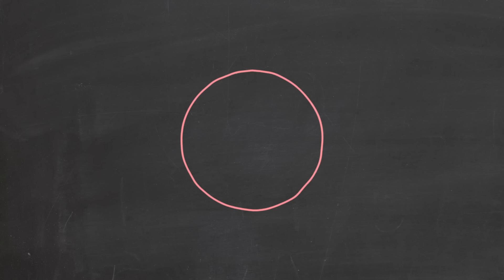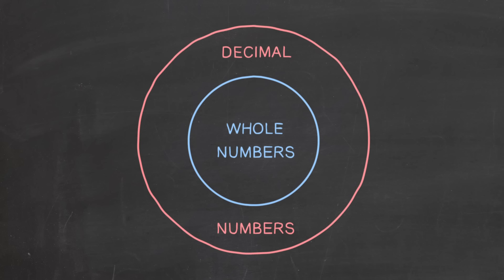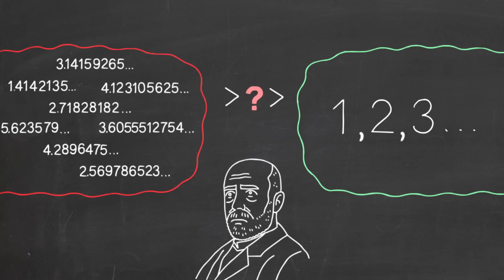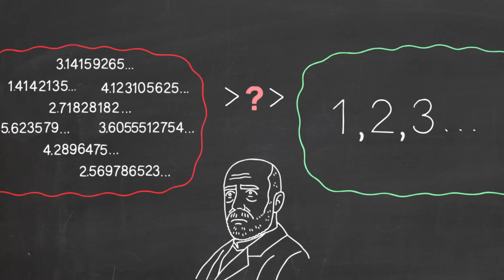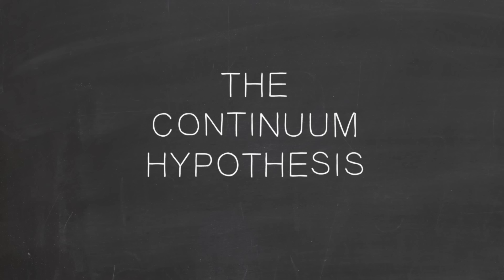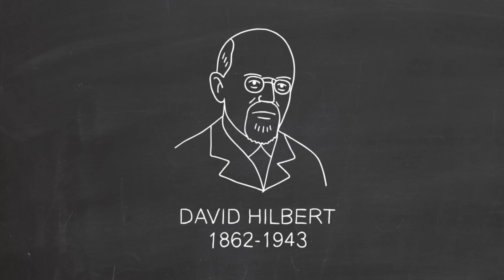Someday, perhaps, they'll be common knowledge. There's more. We just pointed out that the set of decimal numbers, that is, the real numbers, is a bigger infinity than the set of whole numbers. Cantor wondered whether there are infinities of different sizes between these two infinities. He didn't believe there were, but couldn't prove it. Cantor's conjecture became known as the continuum hypothesis.